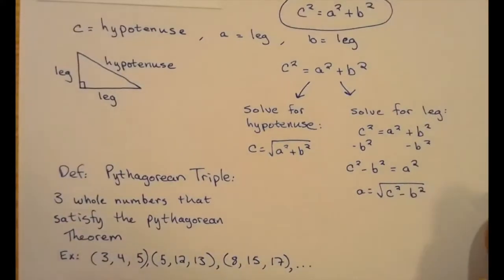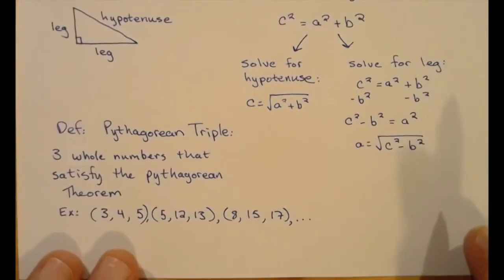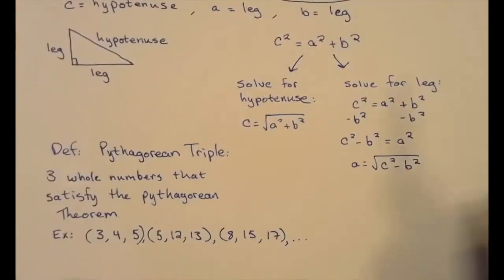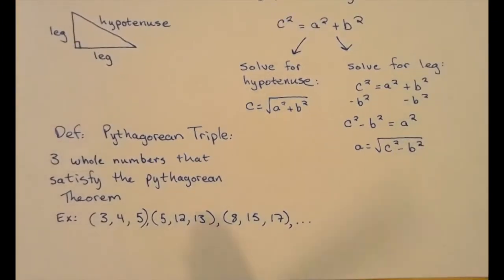Okay, the last bit of building vocabulary and ideas. And we've sort of seen this before, but now we'll formally define them. A Pythagorean triple is a set of three whole numbers that satisfy the Pythagorean theorem. And the list actually goes on and on forever. But here are the first few of them.